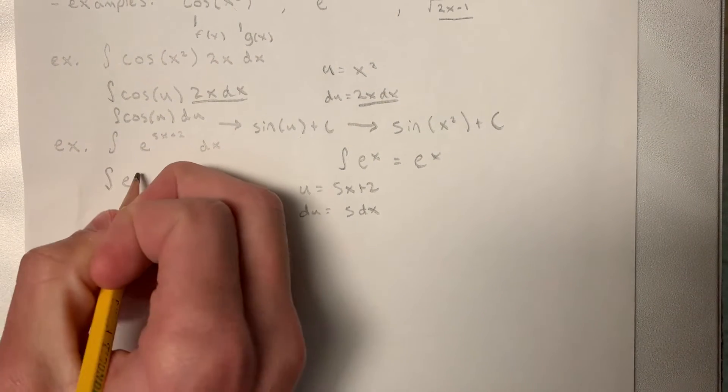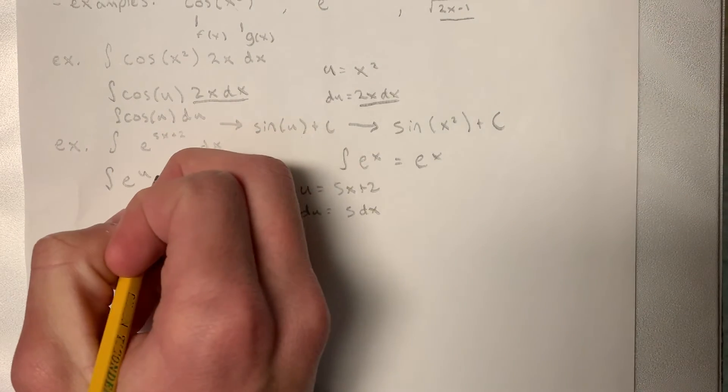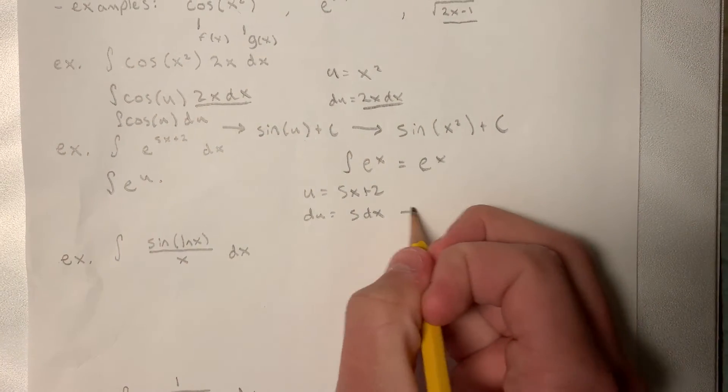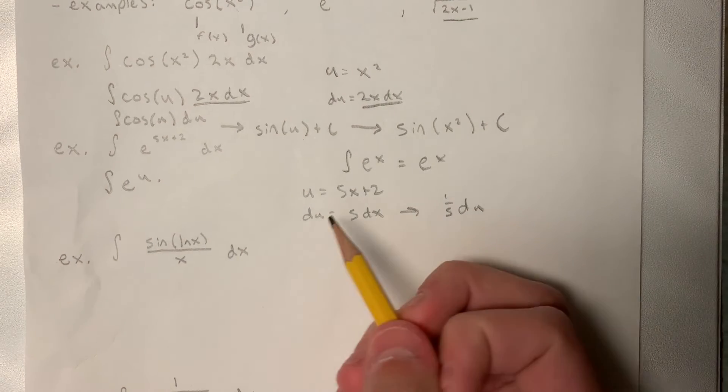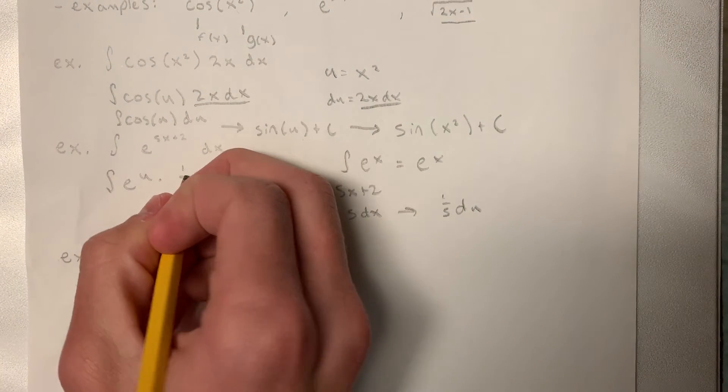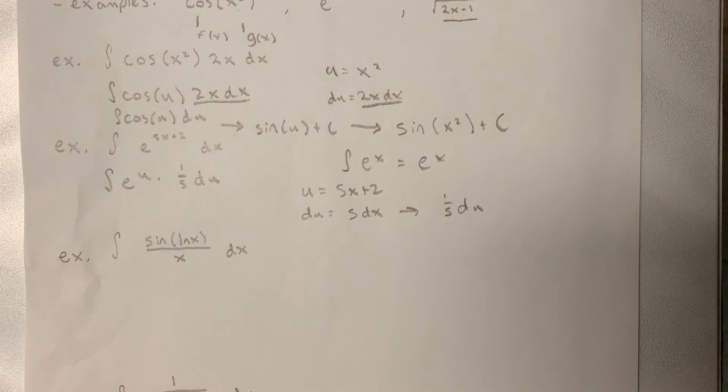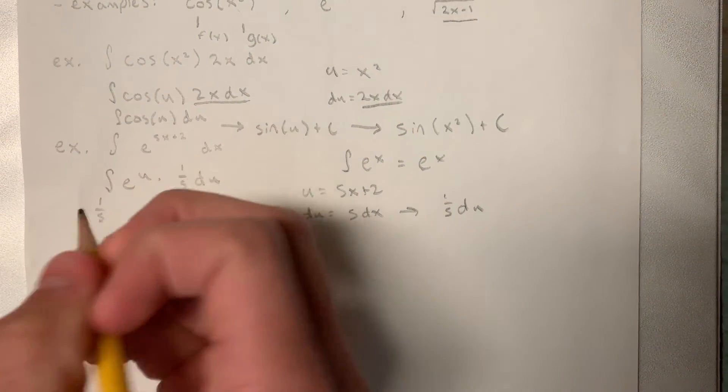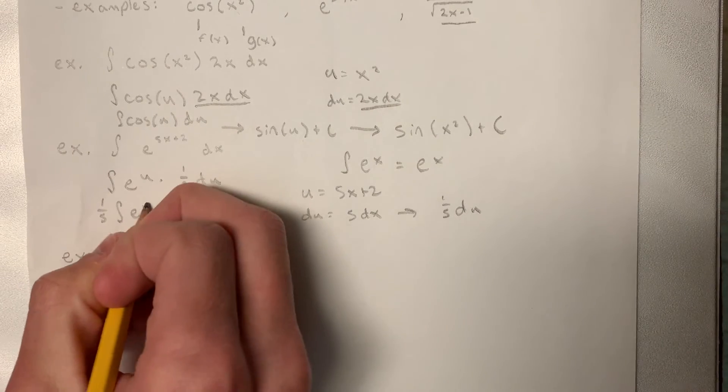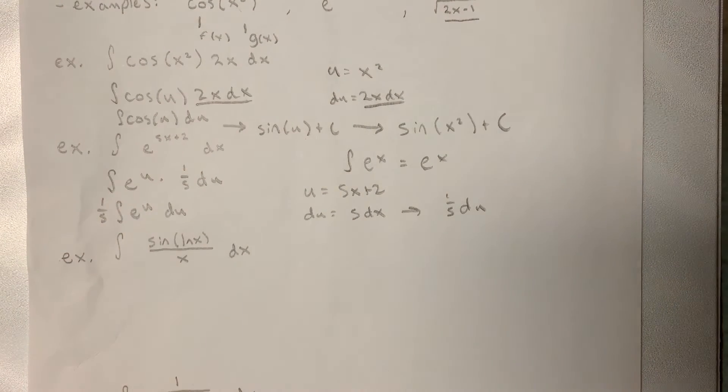Okay, so now we have the integral of e to the u times... So what is our dx? Well, our dx would be just 1 fifth du. This should bring the 5 over. So we have e to the u times 1 fifth du. Alright, so we can pull out the 1 fifth. 1 fifth times the integral of e to the u with respect to u.